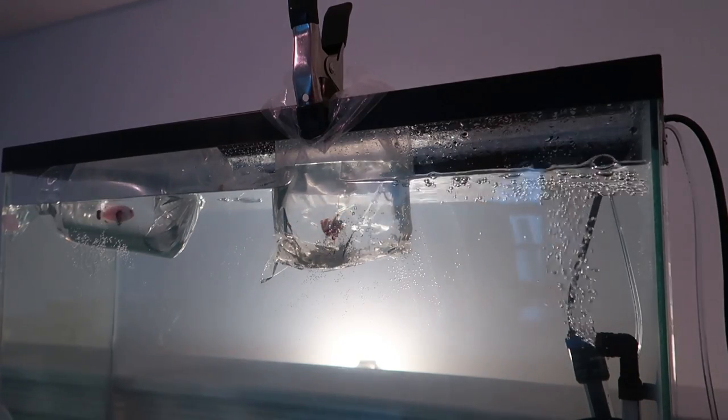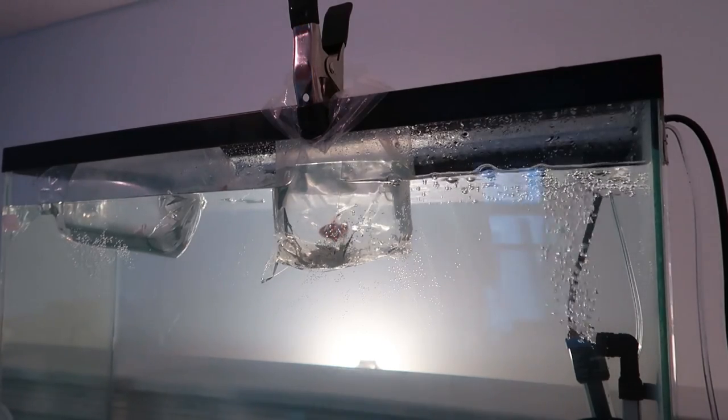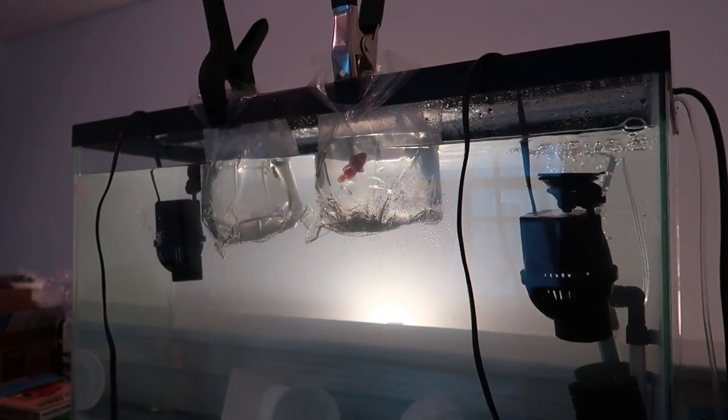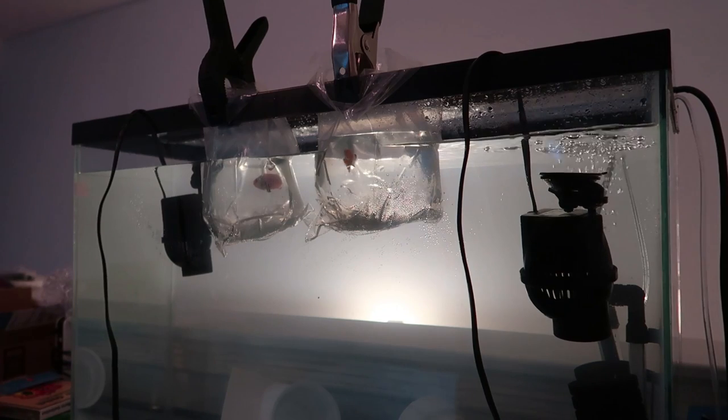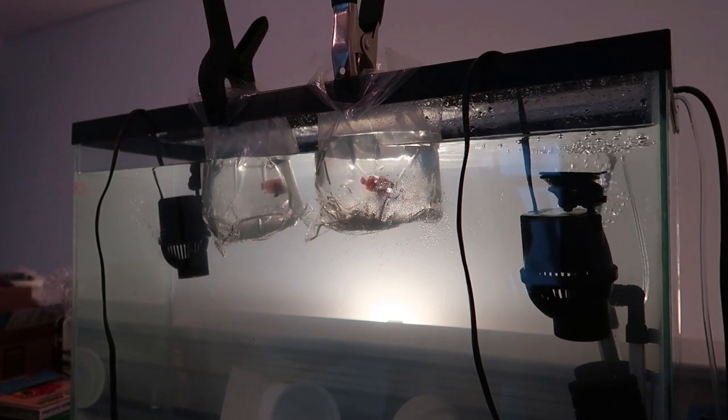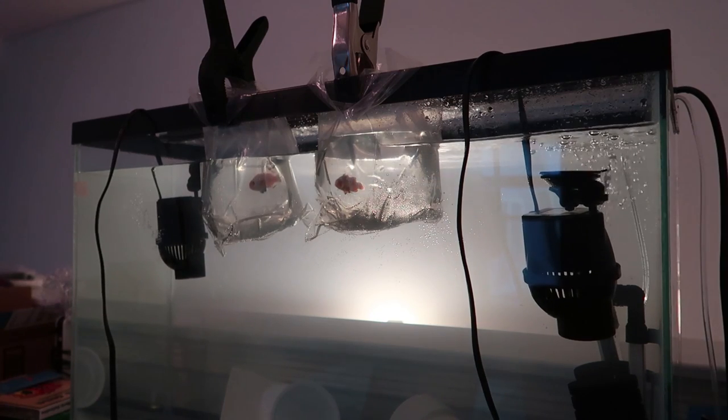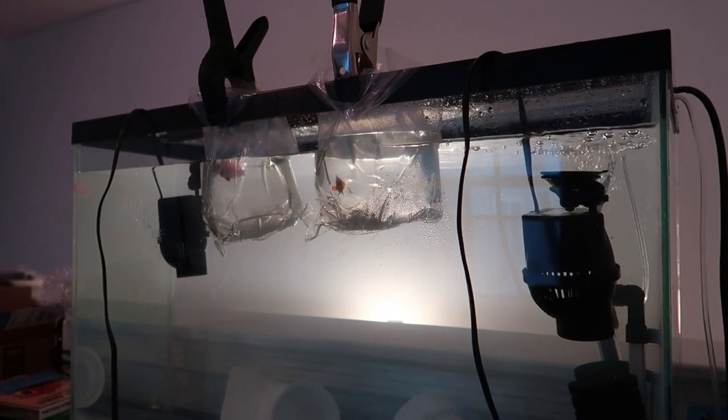I had to make sure that the tank had salt added to it a little bit closer to where these guys were. To speed up that process, I added two powerheads that were way overrated for a 29 gallon tank, but they were able to mix the salt water much quicker than if I didn't. Once the tank's salinity was a little bit closer to where I wanted it, I started the drip acclimation.